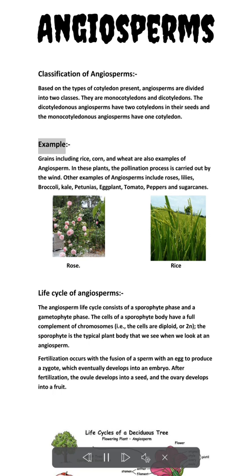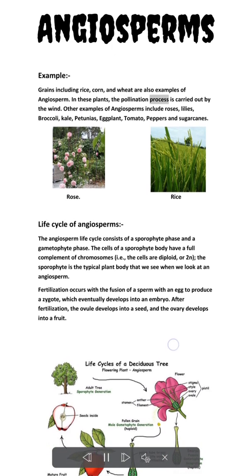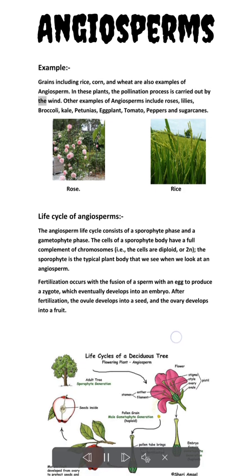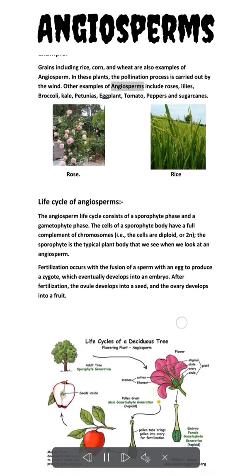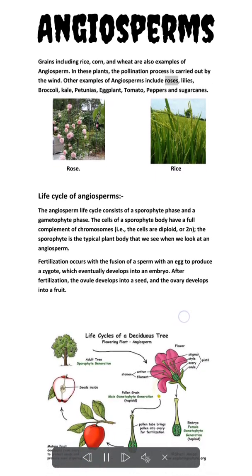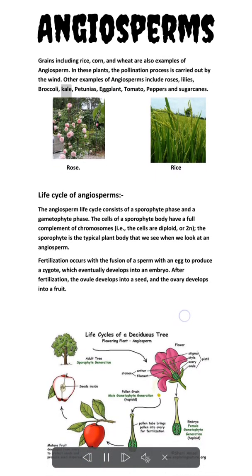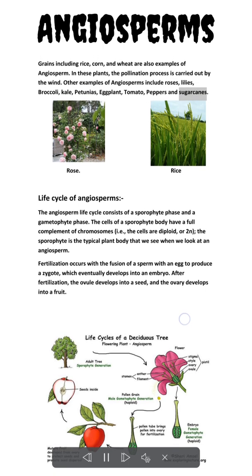Examples. Grains including rice, corn, and wheat are also examples of angiosperms. In these plants, the pollination process is carried out by the wind. Other examples of angiosperms include roses, lilies, broccoli, kale, petunias, eggplant, tomato, peppers, and sugar canes.